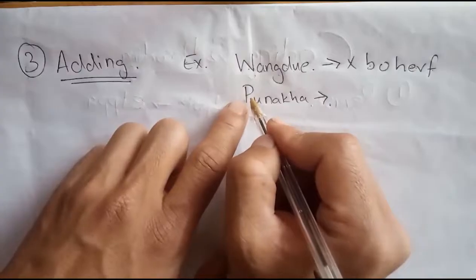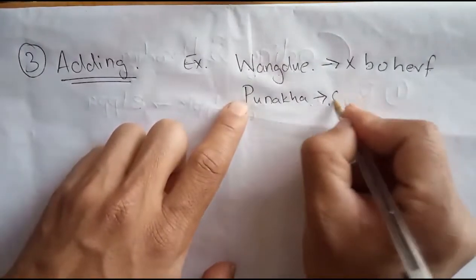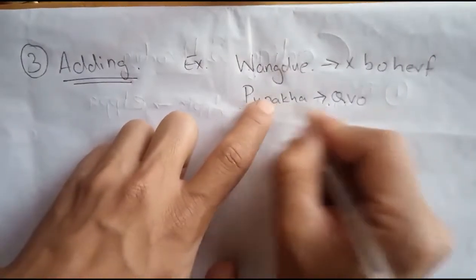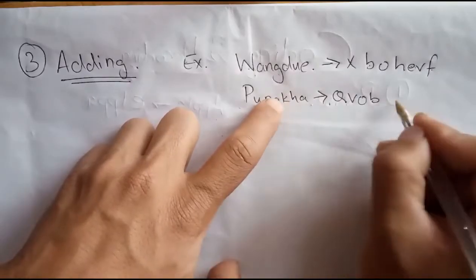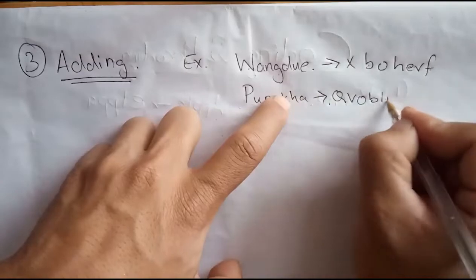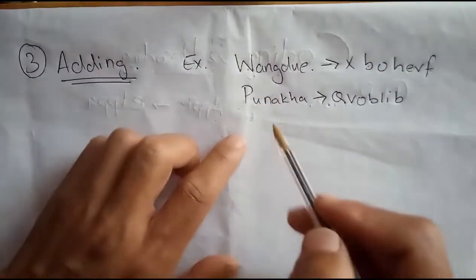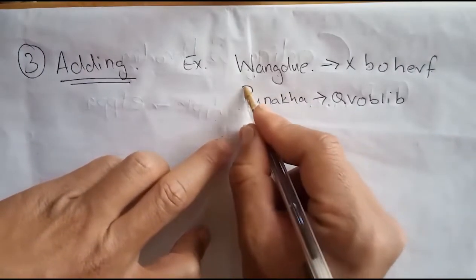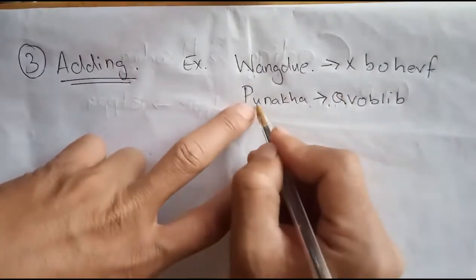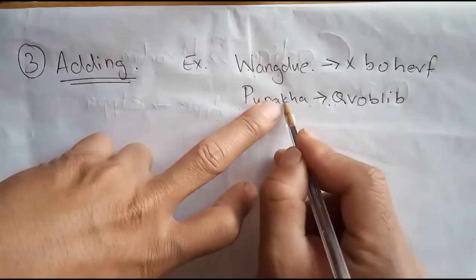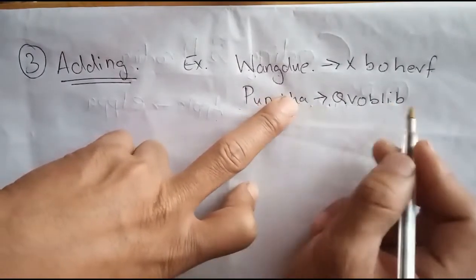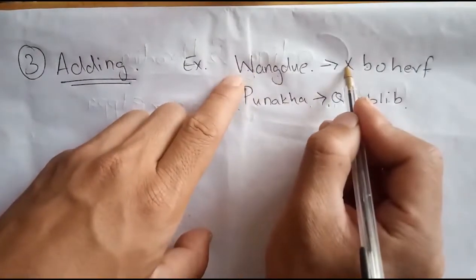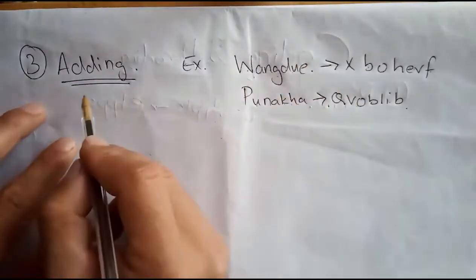So in the addition method, we replace each letter with the next alphabet. For PUNAKHA: P→Q, U→V, N→O, A→B, K→L, H→I, A→B. So PUNAKHA would be coded as QVOBLHIB. You can directly recognise this as the adding method.